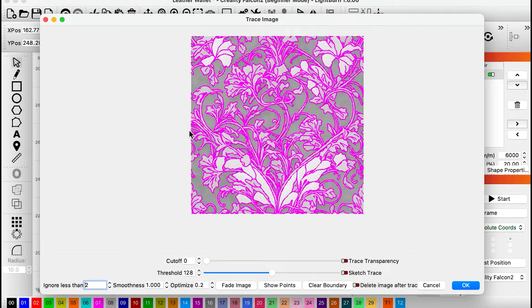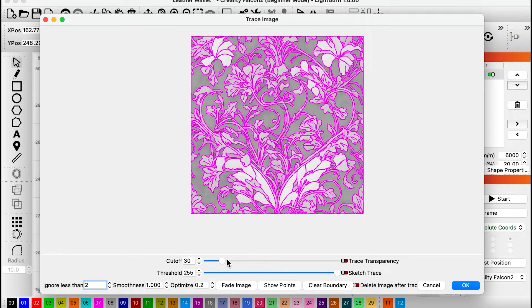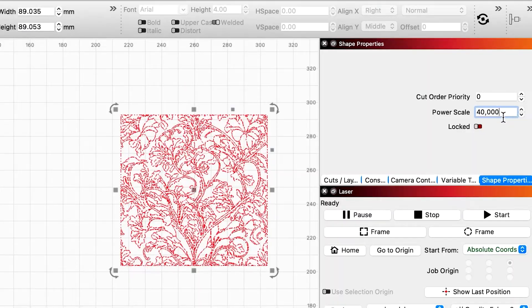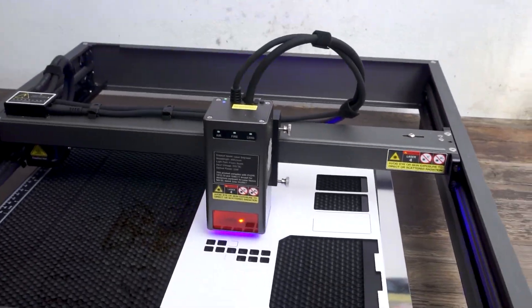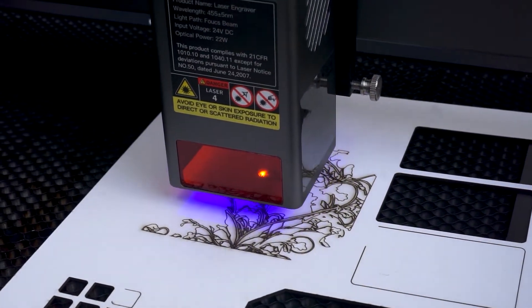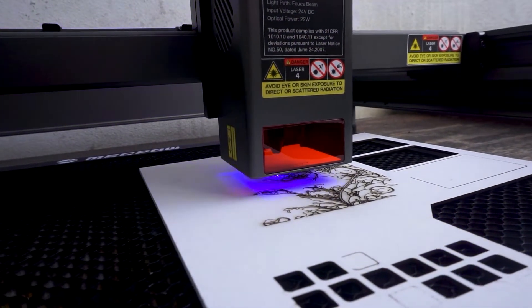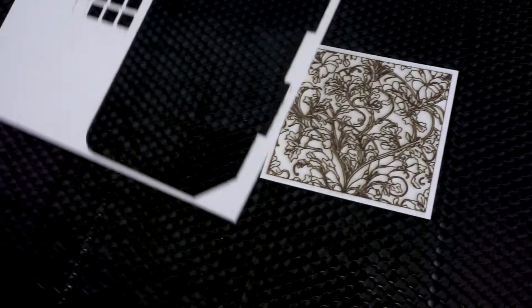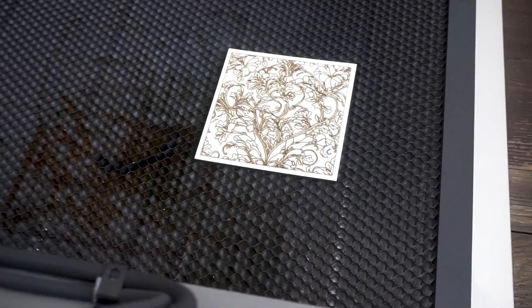I tested a feature of LightBurn that allows you to turn any image into an engraving. So we can have two layers, one for the lines that need to be engraved with less power, and then a second layer for the parts that need to be cut. Here is this rectangle that was cut once the engraving was finished.